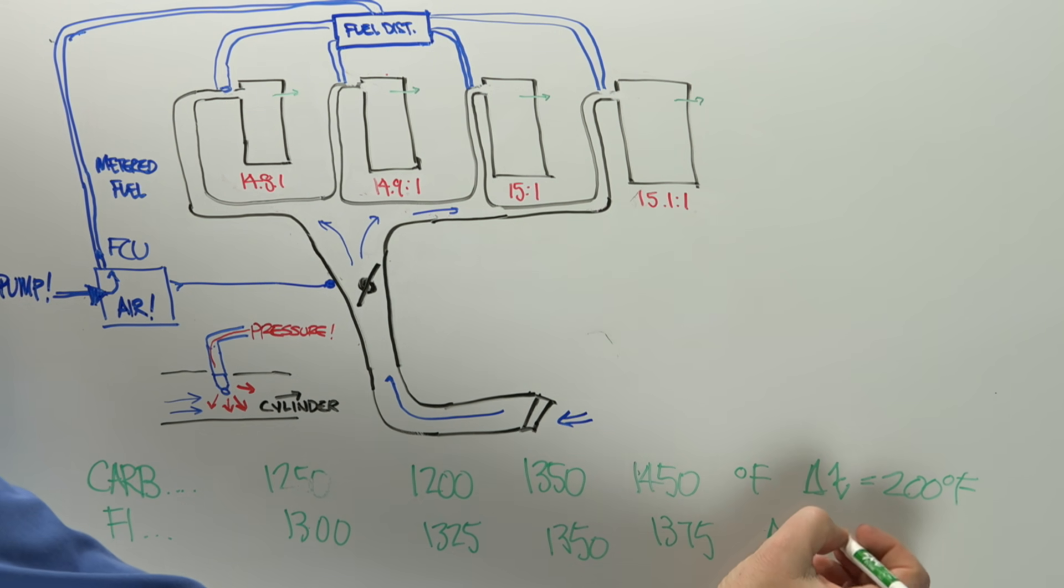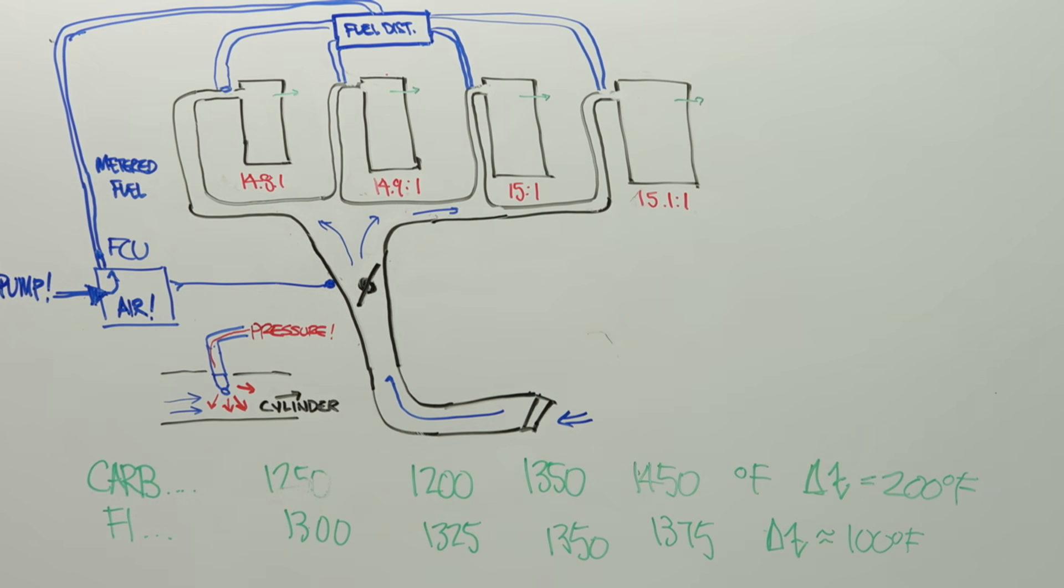So what I can now see is my change in temperature between each of the cylinders has been reduced significantly. It's not uncommon for fuel injected engines to be able to keep the temperature variation between cylinders at about 100 degrees Fahrenheit, or less, as in the case that I've shown you here.